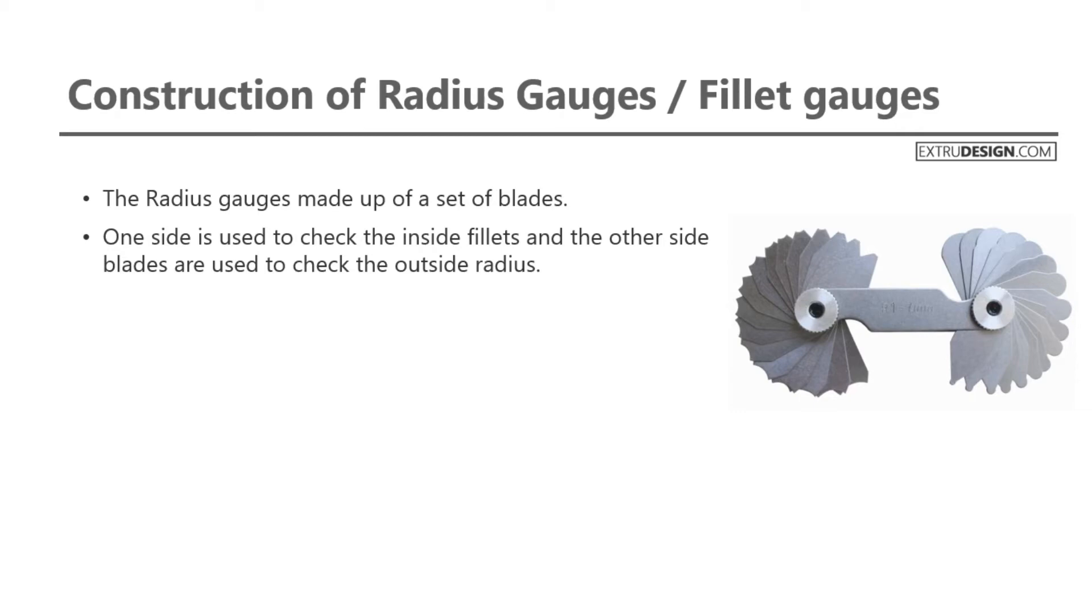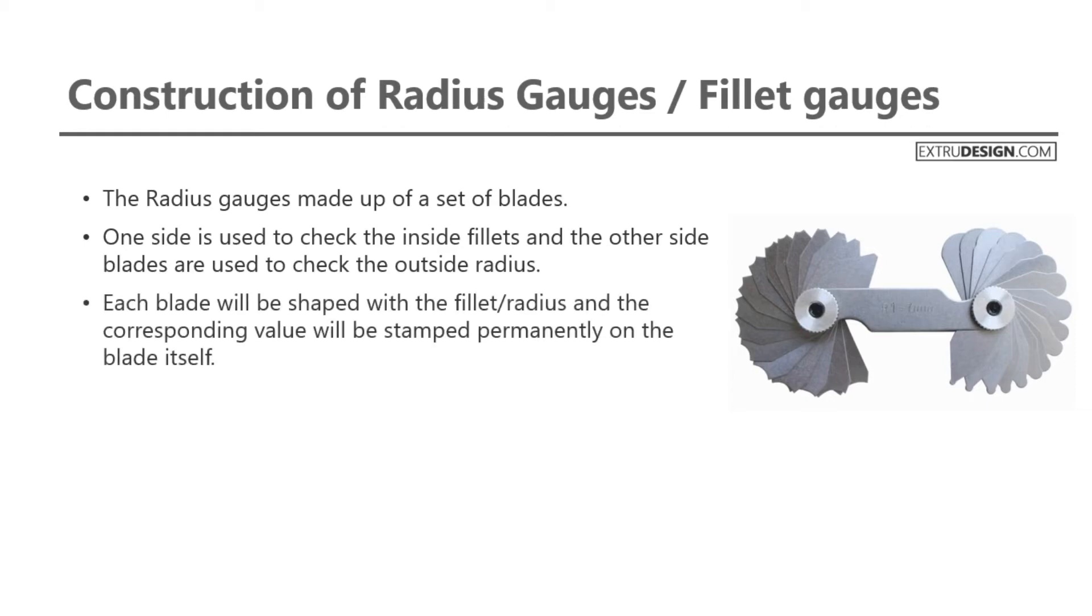One side is used to check the inside fillets and the other side blades are used to check the outside radius. Each blade will be shaped with the fillet or radius and the corresponding value will be stamped permanently on the blade itself. Now you got an idea why it has two sets of blades.